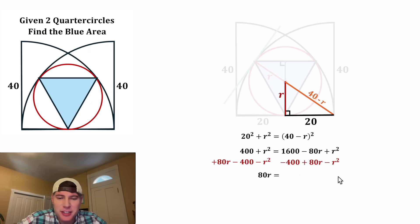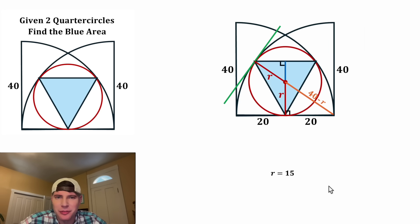And on the right-hand side, all of this will cancel out, leaving us with 1600 minus 400, which is 1200. And then from here, we can divide both sides by 80 and that'll leave us with R is equal to 15. And now we have the value for R.